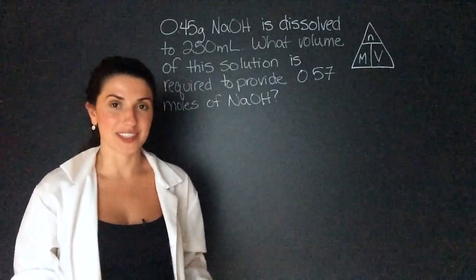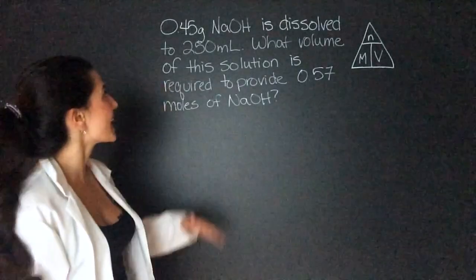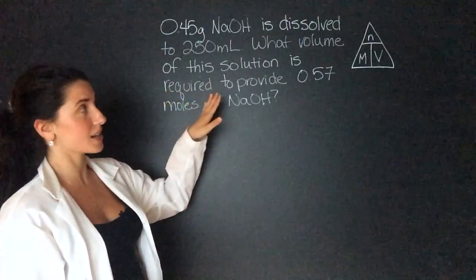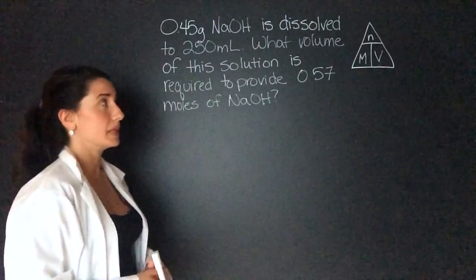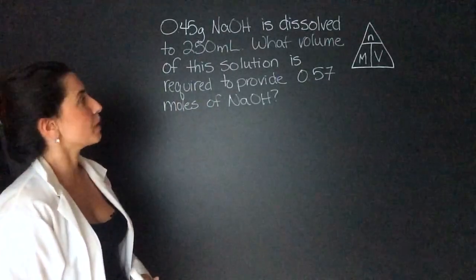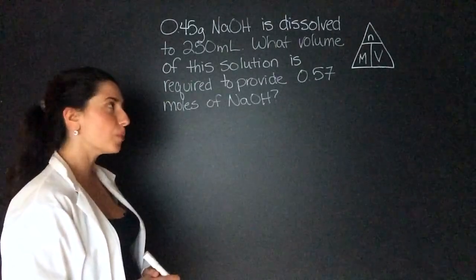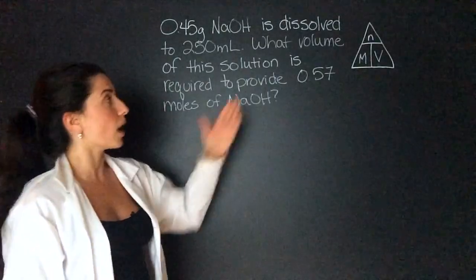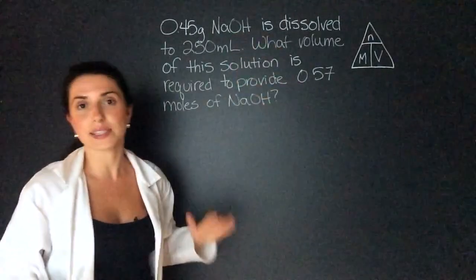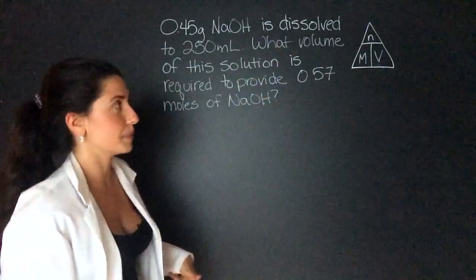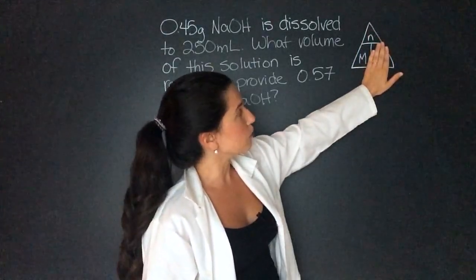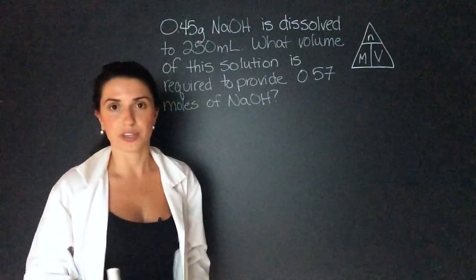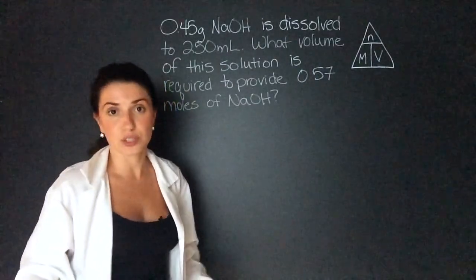My last question is something you're likely to see on an exam. It says 0.45 grams of sodium hydroxide is dissolved in 250 milliliters. What volume of this solution is required to provide 0.57 moles of NaOH? So at the end of the day, they want us to find the volume. That is what our final answer is going to be. So let's cover up volume and we need moles over molarity. They give us the moles, but they don't give us molarity. So we have to find the molarity of this solution first.